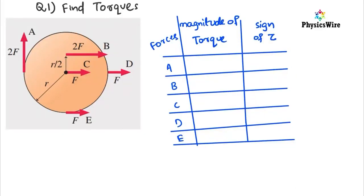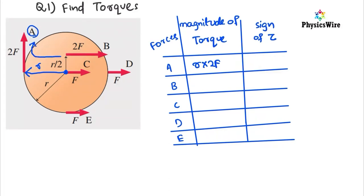Now let's calculate the magnitude and sign of the torque. Different forces are acting and the fixed point is the center of the circle. For force A, draw a straight line from the center to the force — this is your r vector, so magnitude is r. The magnitude of torque is r times 2F. The direction is clockwise, so the sign is negative: minus r times 2F.